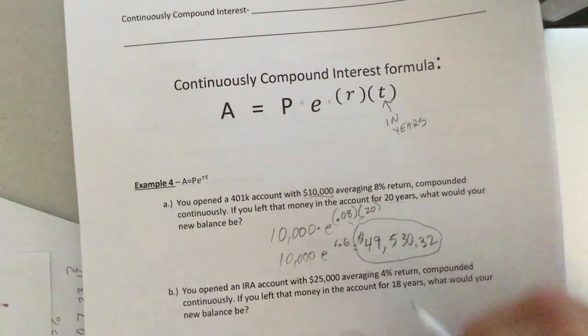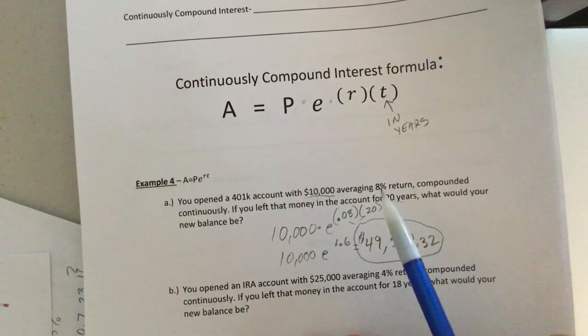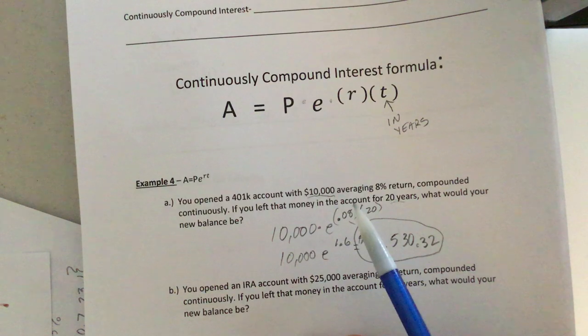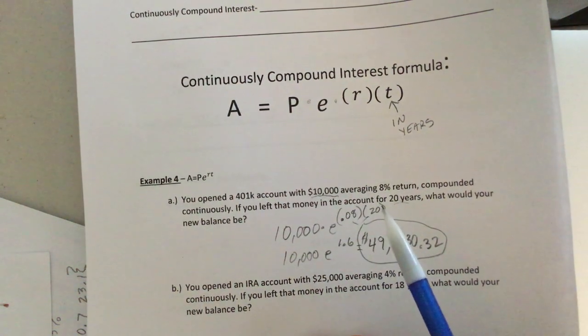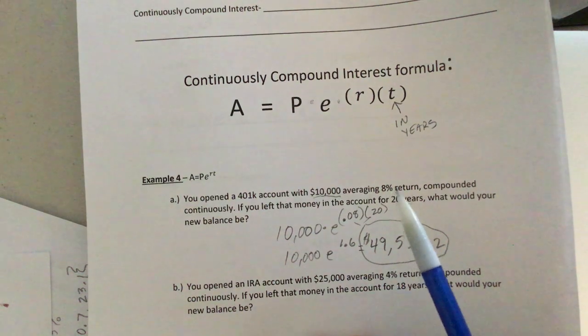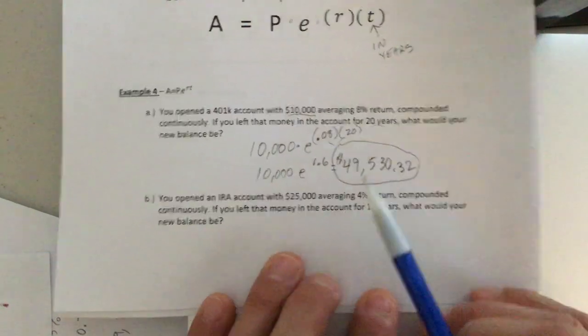You end up with $49,530 and 32 cents. Now, before you say, Holy mackerel, that's unbelievable. 8% return that like never happens on compound interest. Usually for compound interest, you're looking at like a 1% return. Unless it's credit card working against you, that's a whole other story for a whole other time. All right, let's keep rolling.